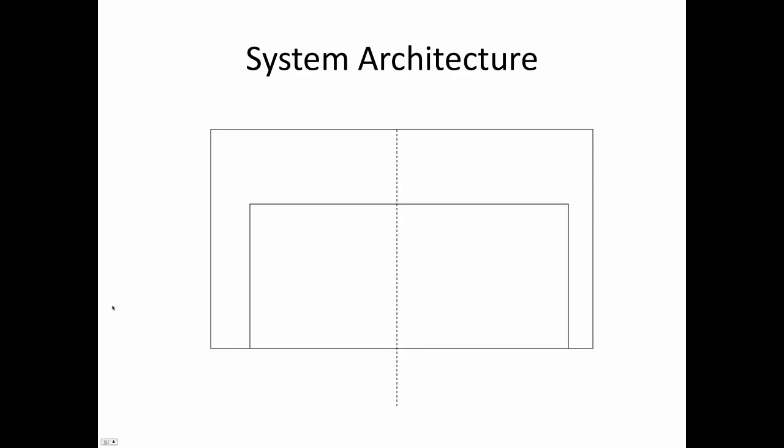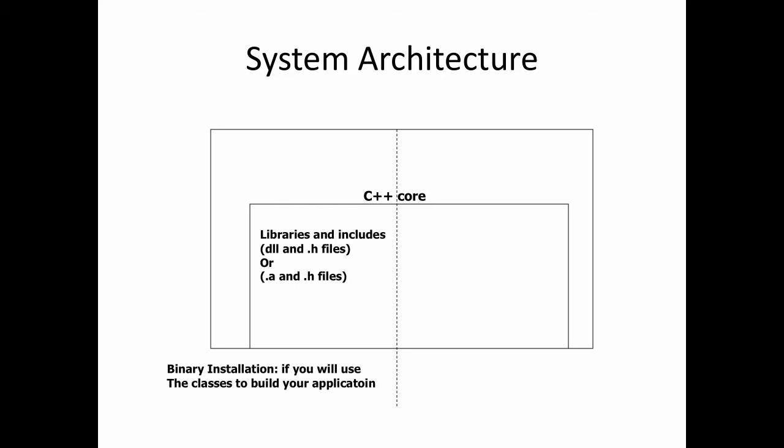Let's look at VTK's system architecture. Internally, VTK is entirely written in C++ as the core. If you only have a binary installation — meaning you're not going to develop VTK but just use it to build your own application — you'll find VTK core has libraries (DLLs or .a/.so objects) and headers. If you have a source code installation, because you might want to extend VTK, you'll need to download all the source code that implements the VTK library.